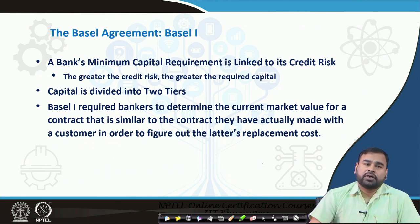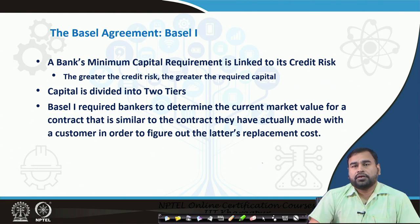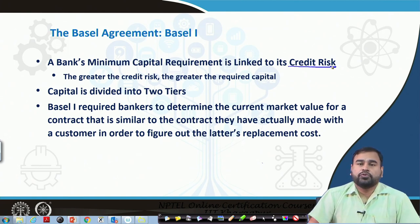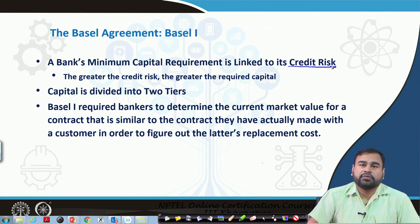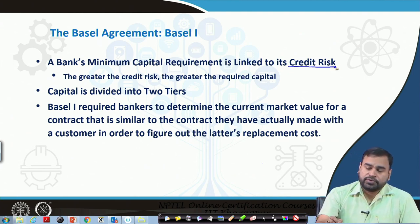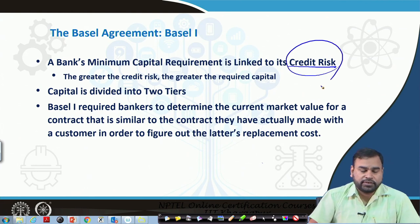What kind of risk should be considered when calculating risk-weighted assets? Basel has given importance to credit risk, which is the most important risk commercial banks face because loans are their major business, and there is always a probability of default on repayment of a loan. Because of that, they started giving importance to credit risk.